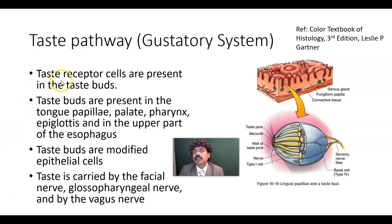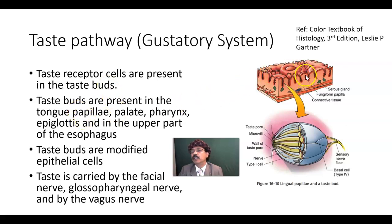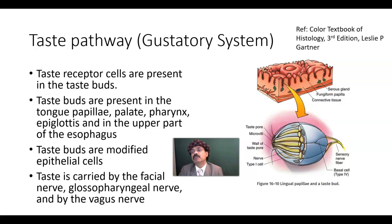The taste receptor cells are present in the taste bud, and those taste buds are present in the tongue papillae. Looking here at this part of the tongue, this is the fungiform papillae, we have the circumvallate papillae, and these small dots are the taste buds. Taste buds are present in the tongue papillae, but not present in the filiform type of tongue papillae.